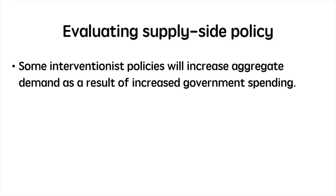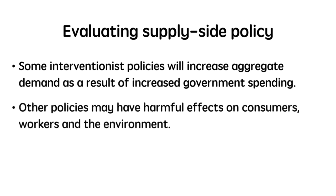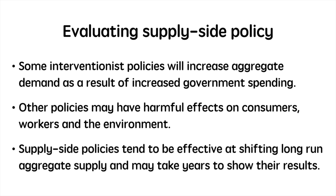To evaluate supply side policies, three key points need to be raised. First, some interventionist policies will increase aggregate demand as a result of increased government spending — if the government seeks to develop a highly skilled workforce, they may need to spend to do so. Second, other policies may have harmful effects on consumers, workers and the environment; if environmental regulations are reduced, this could result in negative externalities to society. Thirdly, supply side policies tend to be effective at shifting long-run aggregate supply but may take years to show their results. It is important to weigh these factors when considering how effective supply side policy is at resolving underlying economic issues.